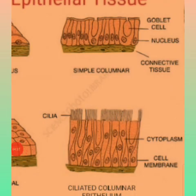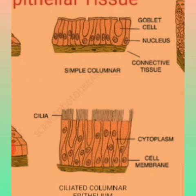The next type is ciliated columnar epithelium. It consists of elongated cells with cilia present on the top. It is responsible for the propulsion of mucus, spreading mucus in the surrounding areas to provide protection. It is present in the trachea, also called the windpipe, and bronchi.